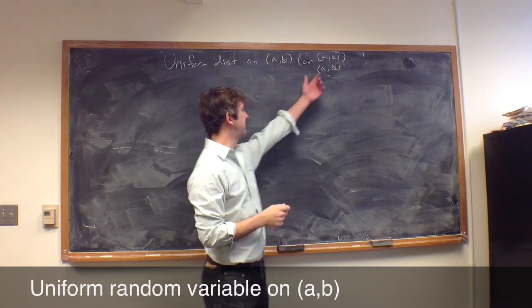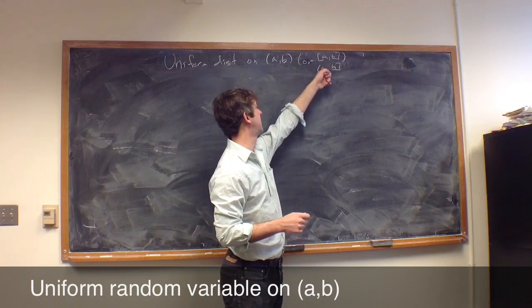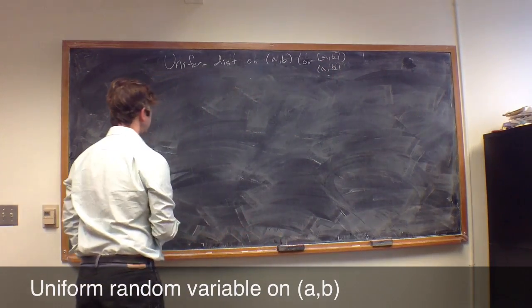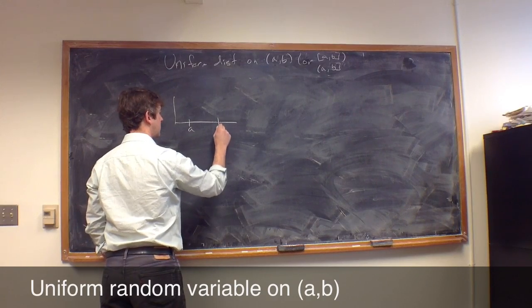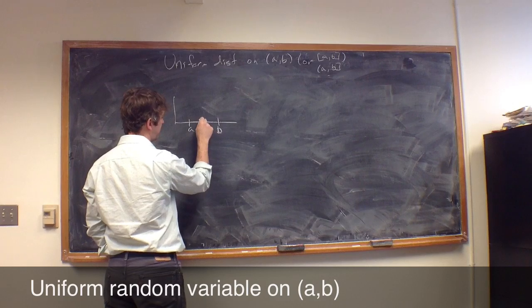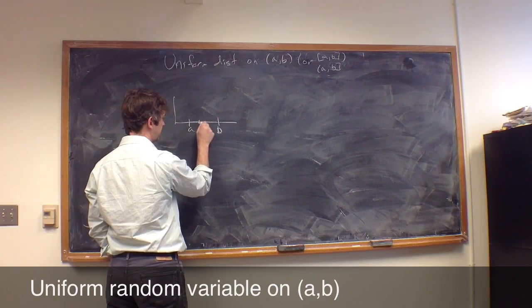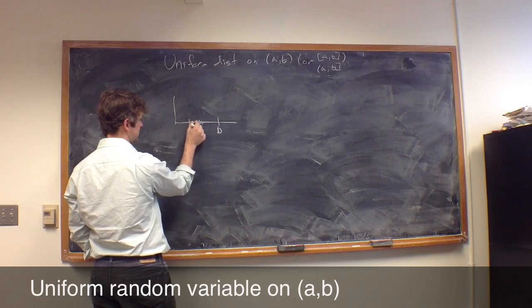As we talked about last time, the probability of getting any given point is zero, so adding or removing a point doesn't matter. The idea is that we want any point in interval (a,b) to be equally likely. Since any point has probability zero, we really want to say that if I take a little tiny interval, the probability of landing in this interval doesn't change as I move it around inside the bigger interval.